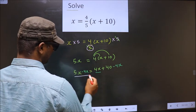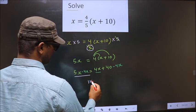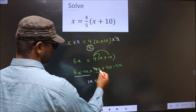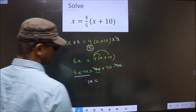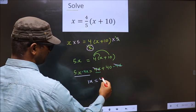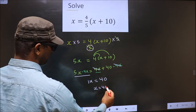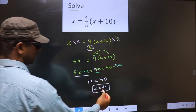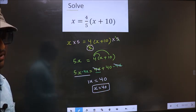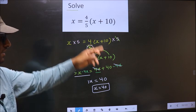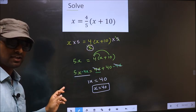So now 5x - 4x is 1x = here 4x - 4x cancel out, you are left with 40. 1x is nothing but x, so x = 40. This is our answer. Am I clear?